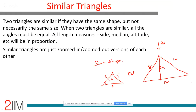How do we establish similarity? Three rules. SSS: if three sides of one triangle are in the same ratio as three sides of another (e.g., 4, 5, 6 and 8, 10, 12), they are similar. AAA: if three angles of one triangle equal three angles of another, they're similar. In practice this is just AA — if two angles are equal, the third will also be equal, so the shapes are the same.